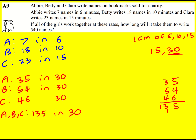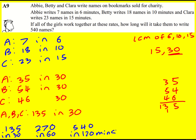One approach now is to do 540 divided by 135. You could instead just double it to 270 — so 135 in 30, 270 in 60 minutes, and then 270 doubled is 540, so 540 in 120 minutes or 2 hours. If you do 540 divided by 135 you'll get 4, and then you would do 30 times 4, which would again give you 2 hours.